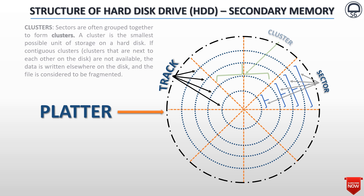Sectors are often grouped together to form clusters. A cluster is the smallest possible unit of storage on a hard disk. If contiguous clusters are not available, then the data is written elsewhere on the disk and the file is considered to be fragmented.